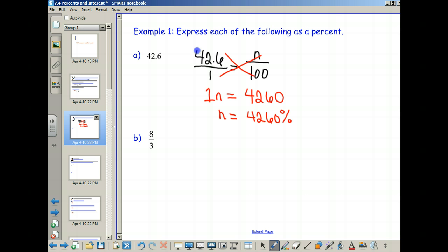We'll do the same thing with part B. Now, part B, we could write this as 8 over 3 over 1, right? But isn't 8 over 3 over 1 just 8 over 3? So I'm just going to write it as 8 over 3. So 8 over 3 equals n over 100.